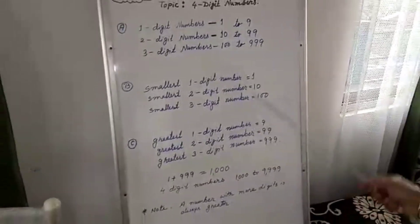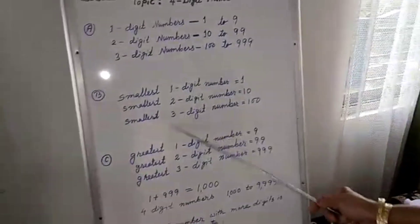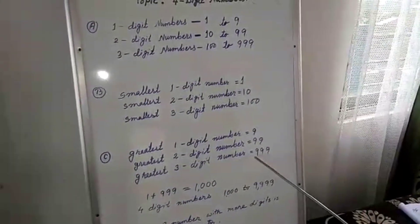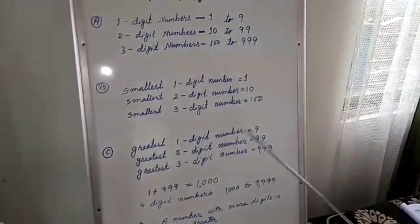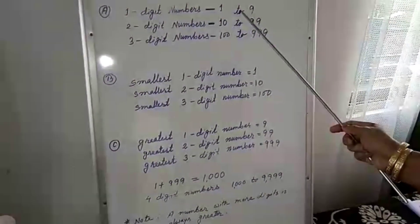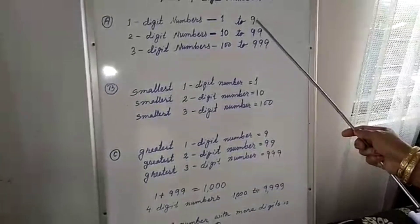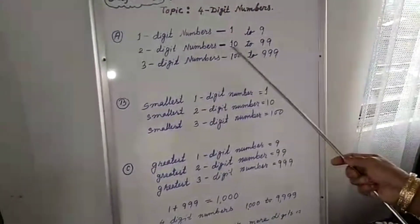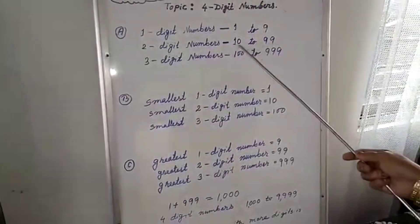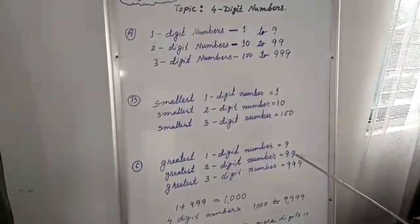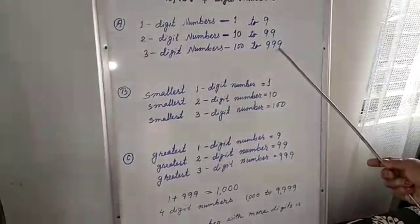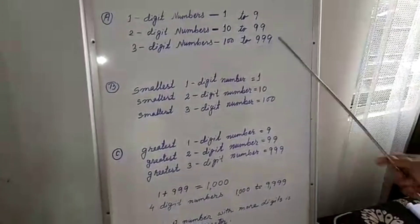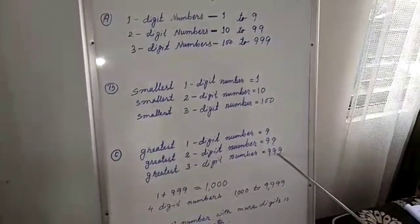The greatest 1-digit number is 9, because 1-digit numbers go up to 9. The greatest 2-digit number is 99, because 2-digit numbers go from 10 to 99. The greatest 3-digit number is 999, because 3-digit numbers go from 100 to 999.